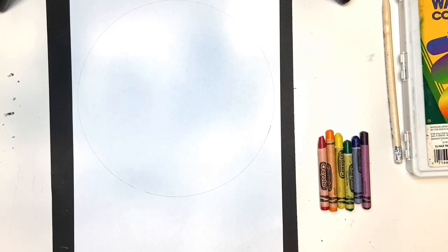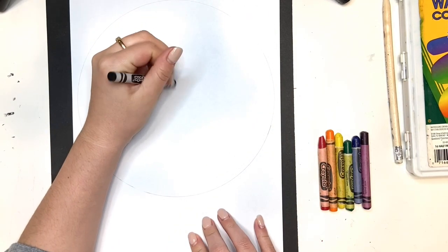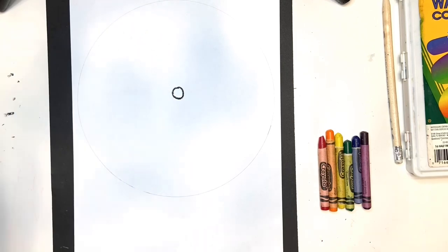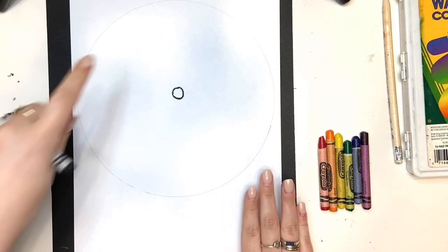From there, using my black crayon, I'm going to draw the middle, which is a little circle inside.